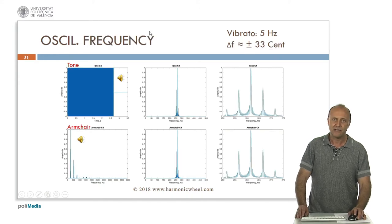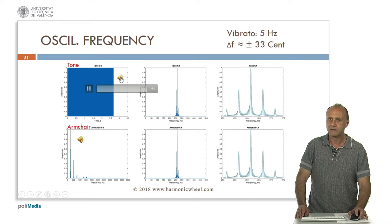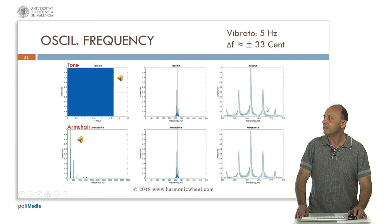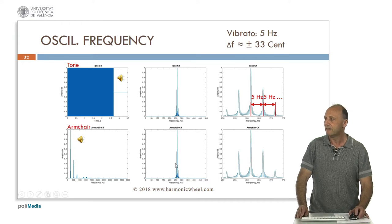Now let's consider an oscillating frequency — a vibrato of 5 Hertz — and a variation in frequency of plus or minus 33 cents. This is the tone. Now the spectral lines contain several smaller lines, 5 Hertz apart, as in the vibrato frequency. In the case of the armchair, we have several lines, each of them equal to the one in the tone.